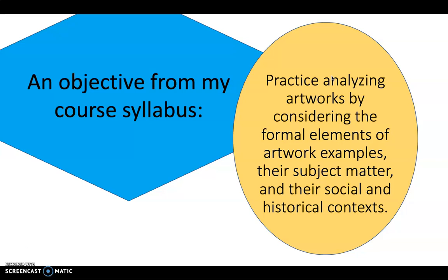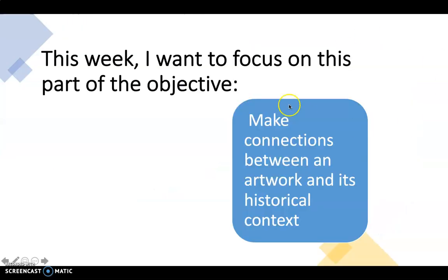I decide when I'm planning a lesson what I want to focus on. For the lesson I'm planning right now, I want to focus specifically on having students practice connecting artworks to their context — looking at an artwork and making connections to what was happening at the time: what was going on politically, geographically, who was purchasing the artwork and why. So those kinds of context connections. That means paring down the big objective to: make connections between artwork and its historical context.